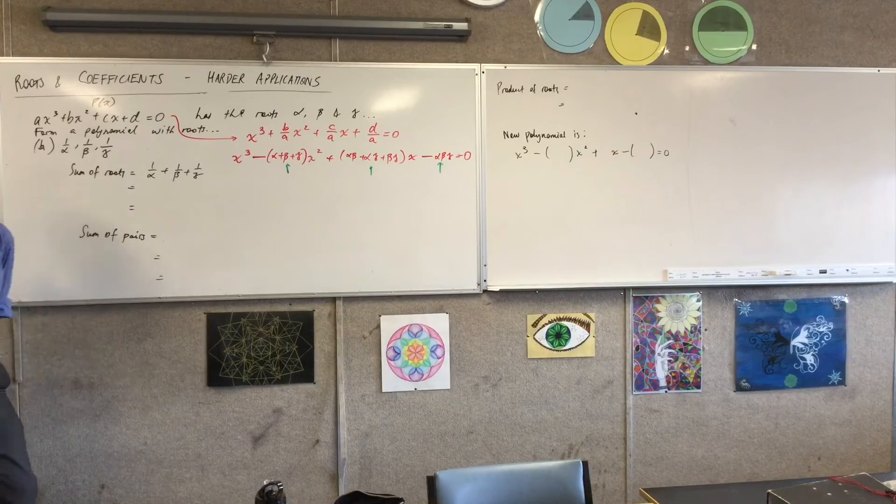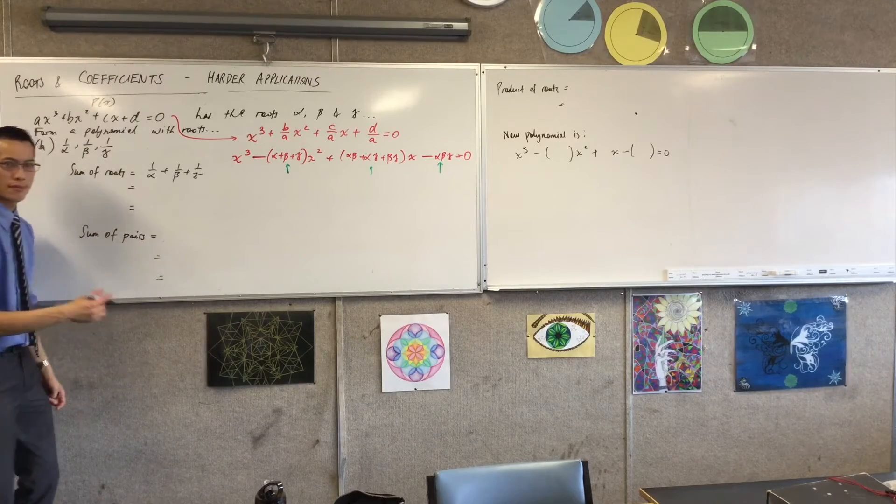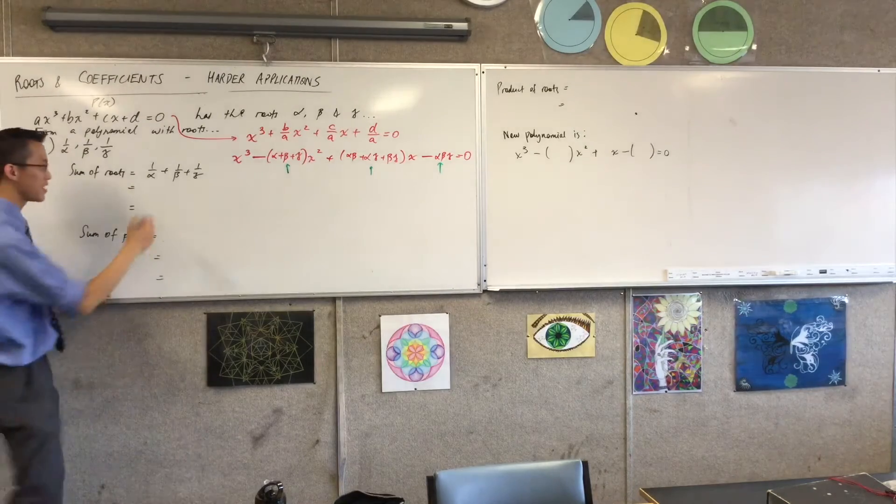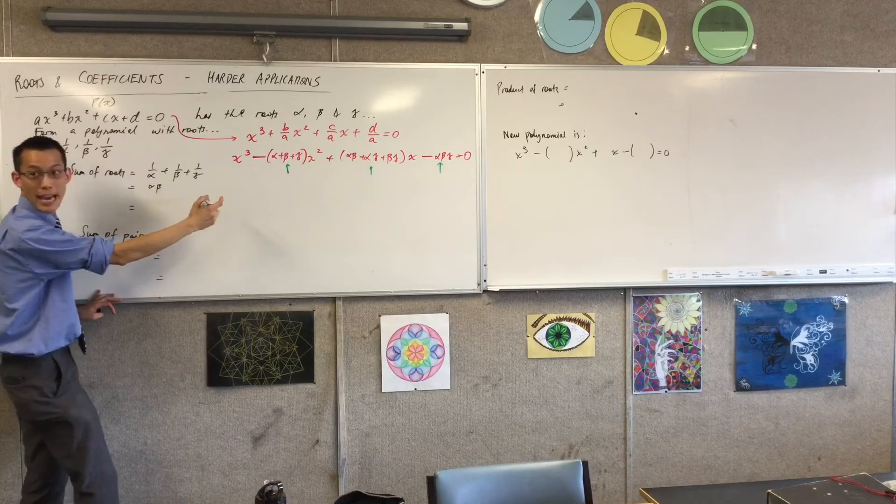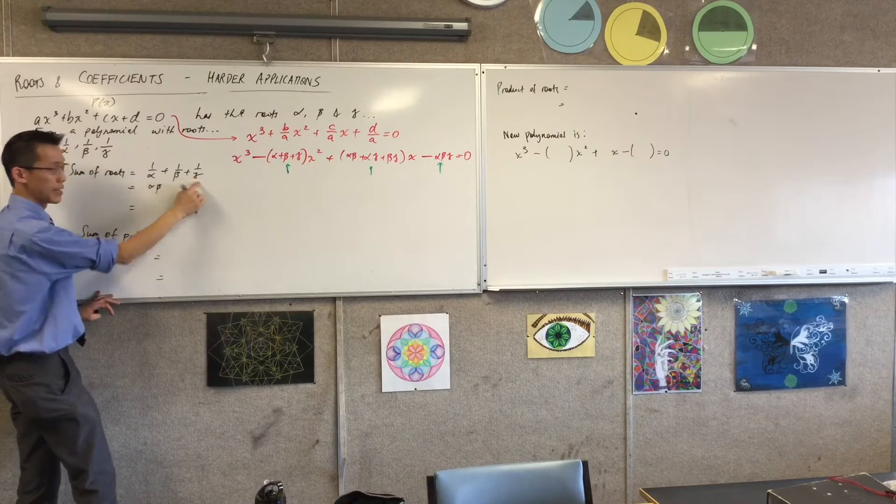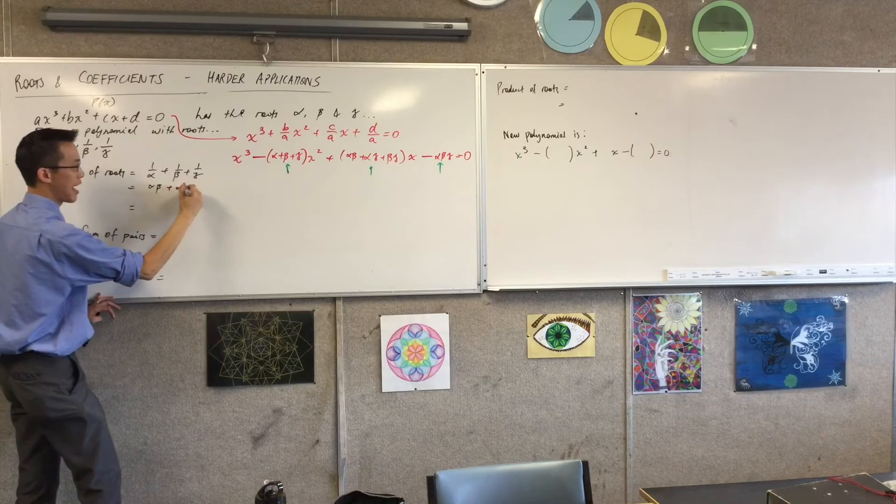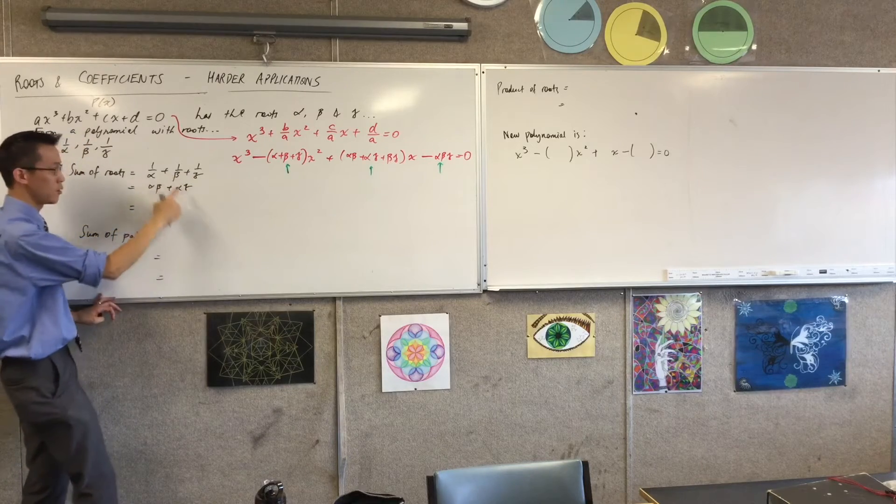So what does the numerator end up looking like? Is it not the sum of pairs? You're going to get alpha beta on alpha beta gamma, which gives you this. Then you're going to get alpha gamma on alpha beta gamma, which will give you this.